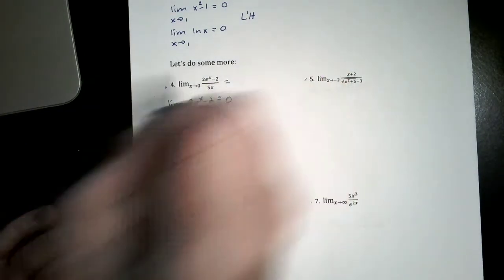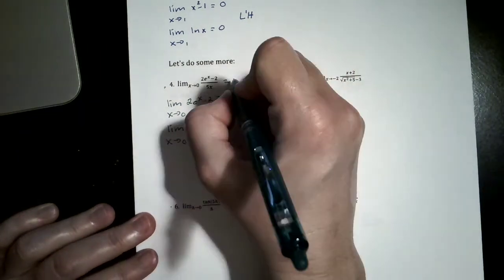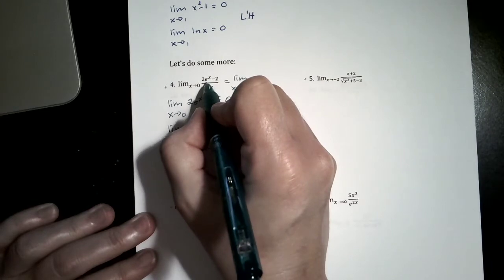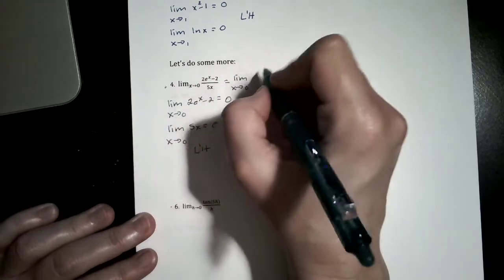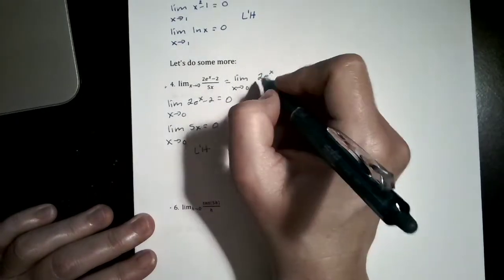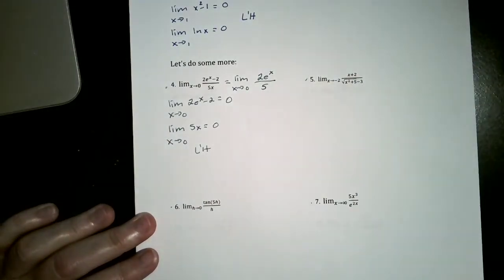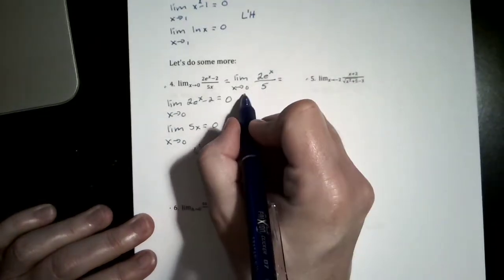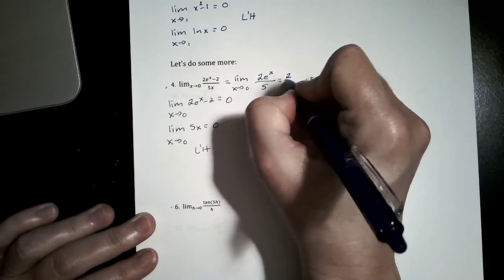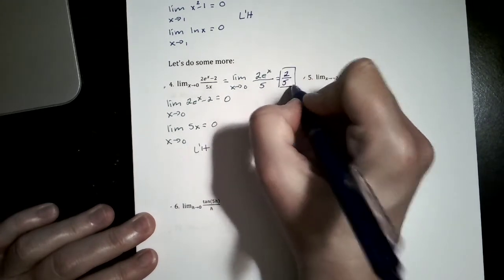This gives me the limit as x approaches 0. The derivative of the top is 2 times the derivative of e to the x, which is e to the x, over the derivative of the bottom, which is 5. Now I can do direct substitution: 2e to the 0 becomes 2 times 1, which is 2, and 5 is just 5. So this answer is 2 fifths.